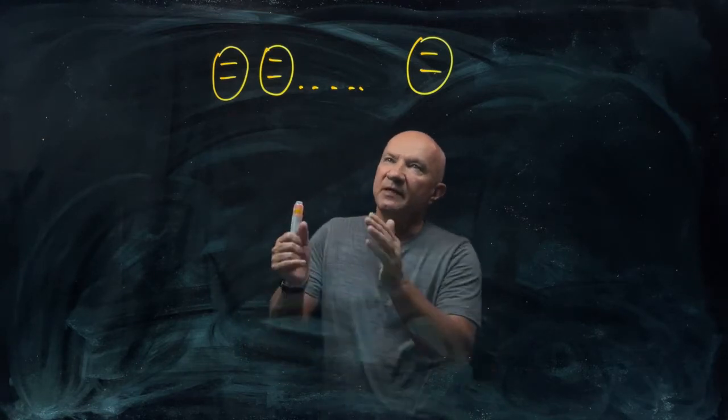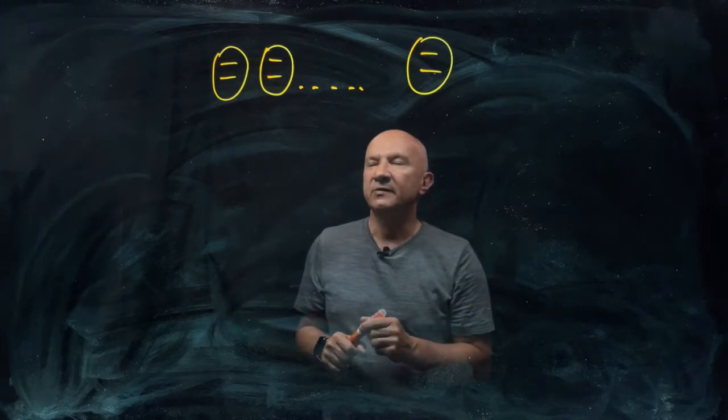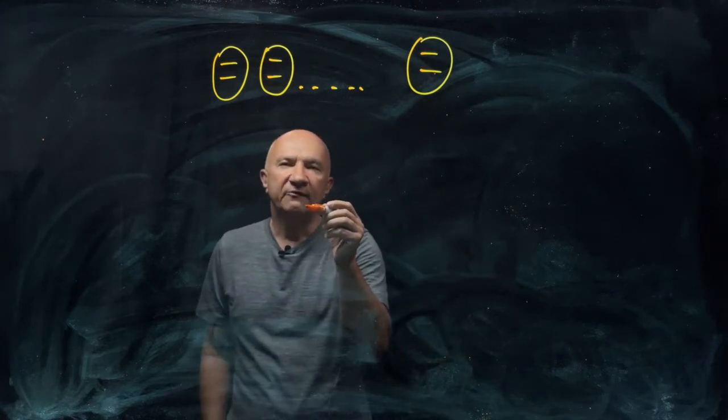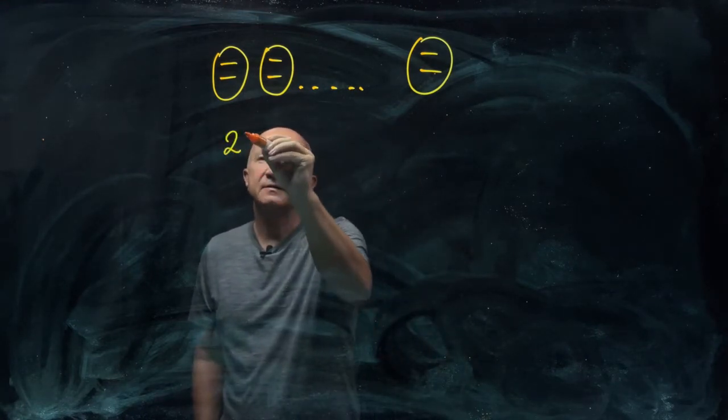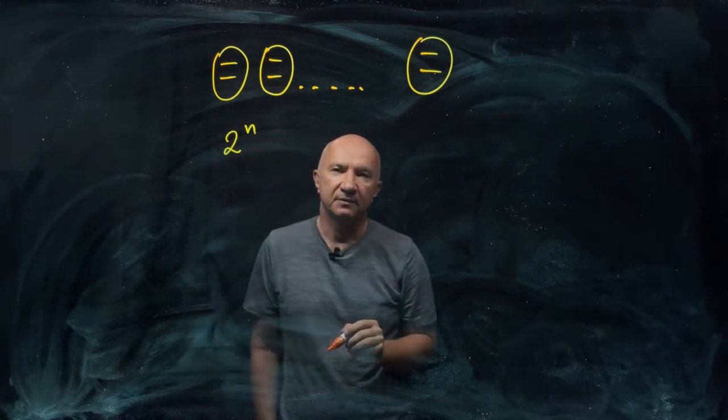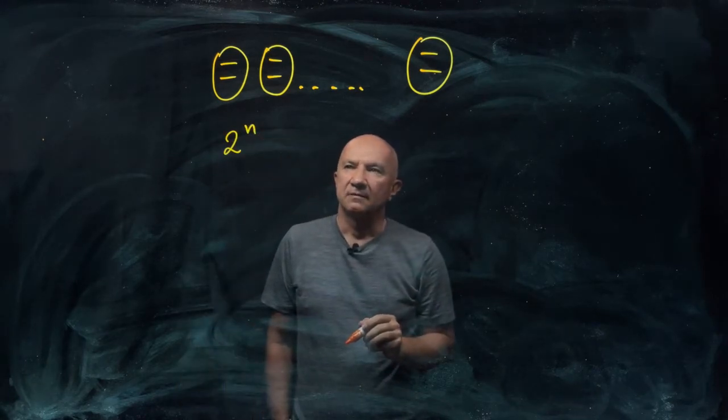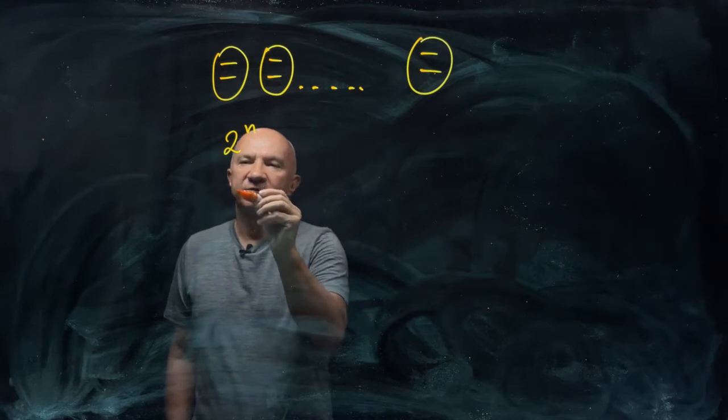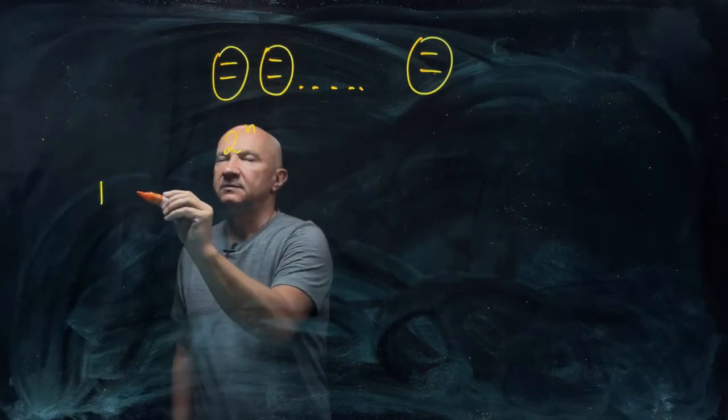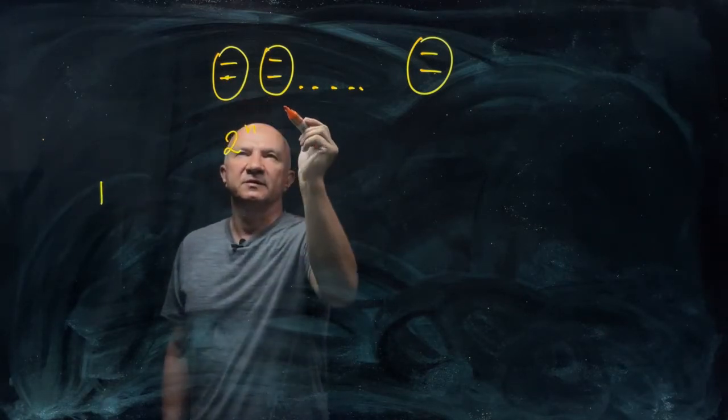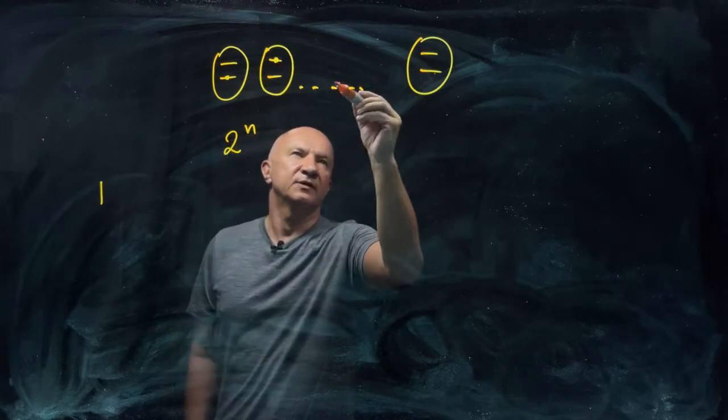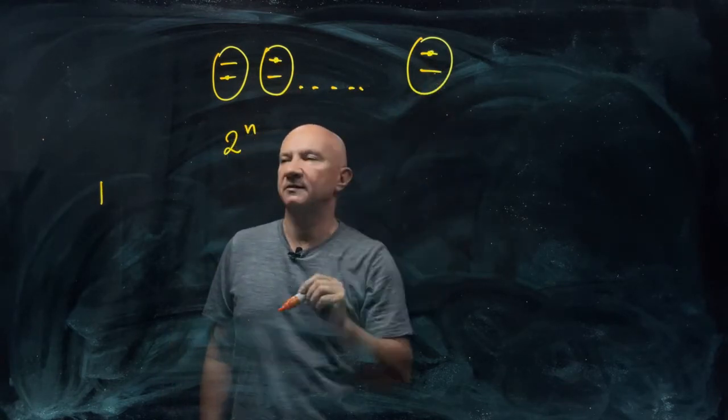Now, whenever we have n of them, of course, we have 2 to the n different configurations, right? So these are, for example, this is in state zero, this is in state one, and whatever it is there in between, and the state one.